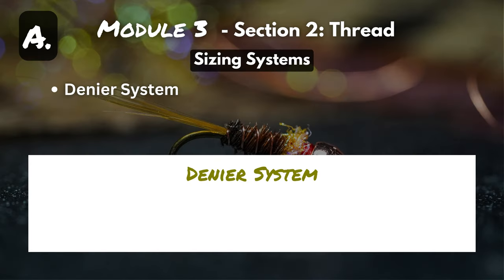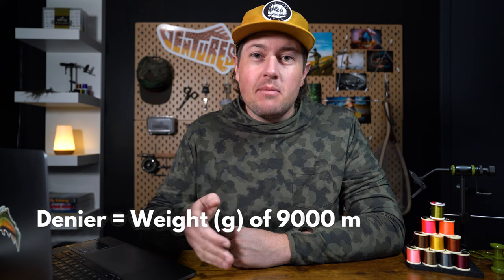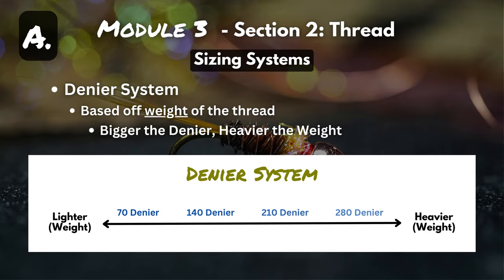Our second sizing system is the denier system. As opposed to the aught system which uses diameter, the denier system is based off the weight of the thread. A denier is the weight in grams of 9,000 meters of thread. The bigger the denier, the heavier the weight. So your 70-denier on the left is going to be lighter than your 280-denier on the right.